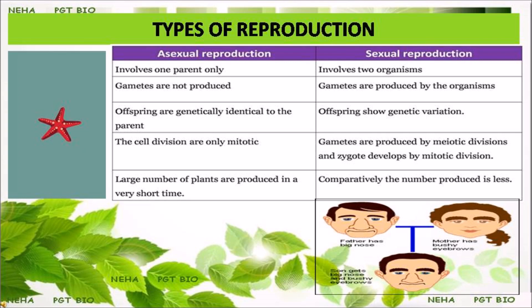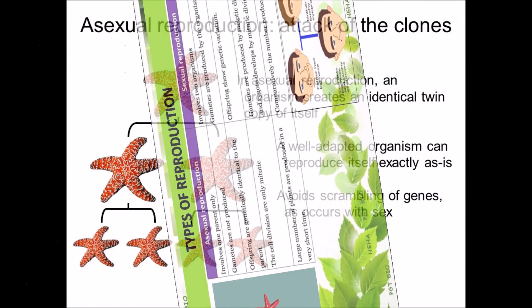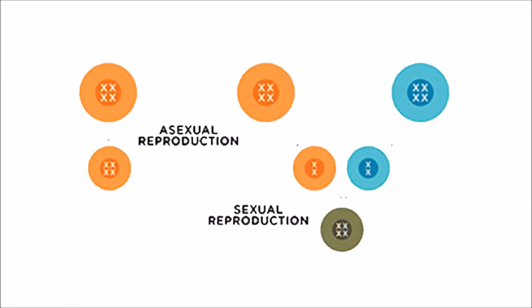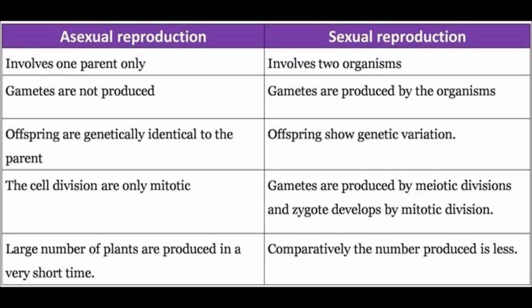Mitotic division results in the formation of daughter cells that are genetically identical to their parent cell — these are called clones. A clone is genetically and morphologically identical to its parents. In sexual reproduction, recombinants are produced because of the fusion of male and female gametes, and due to recombination the offspring shows variation. These are the basic differences between asexual reproduction and sexual reproduction.